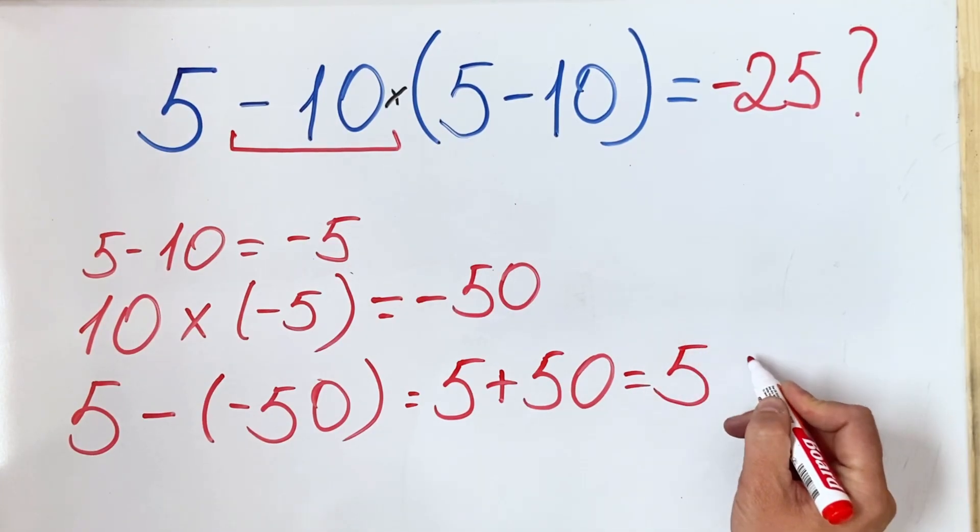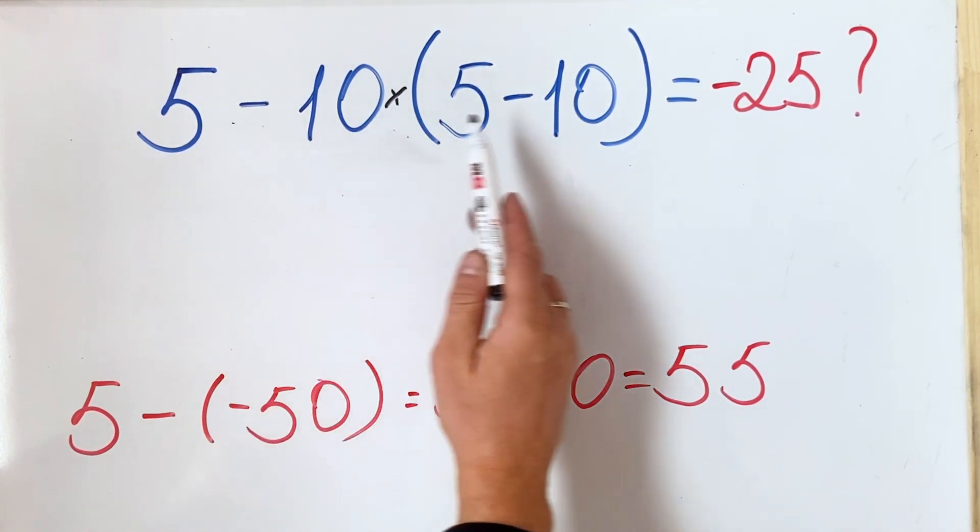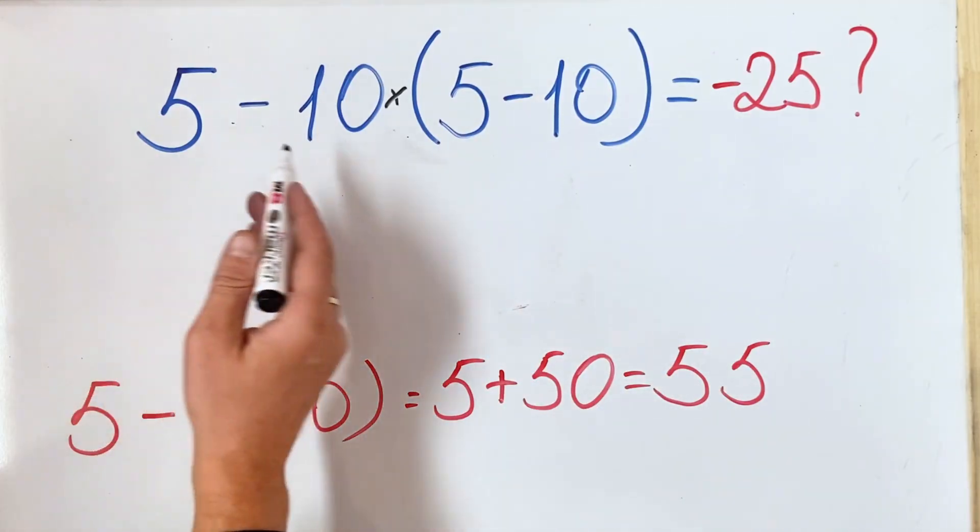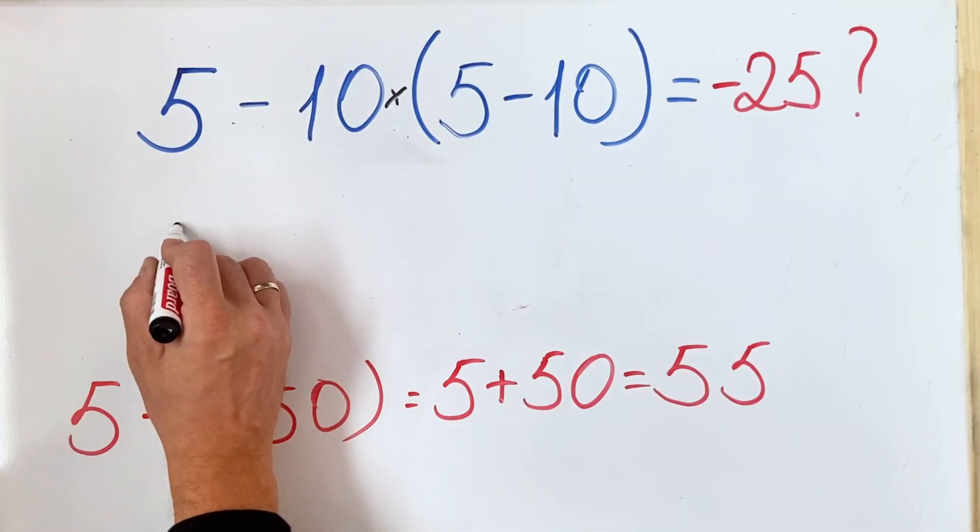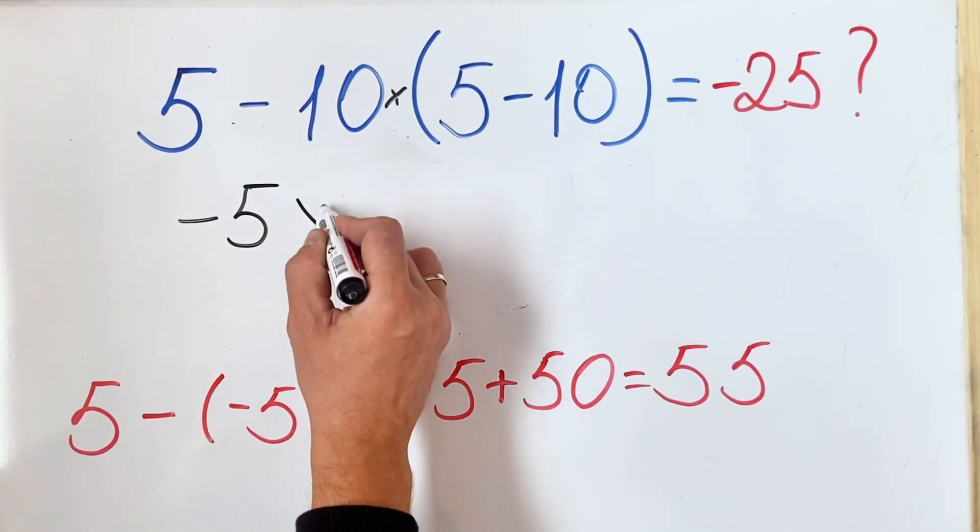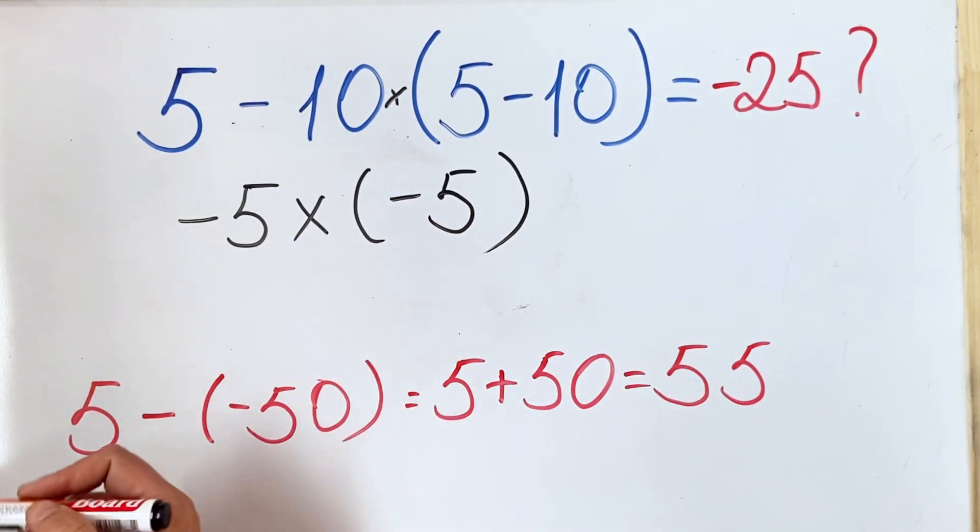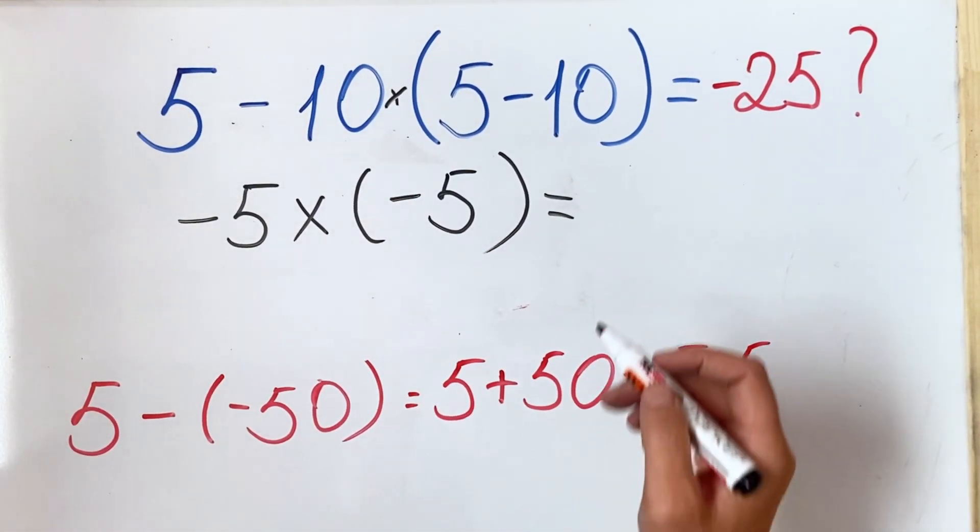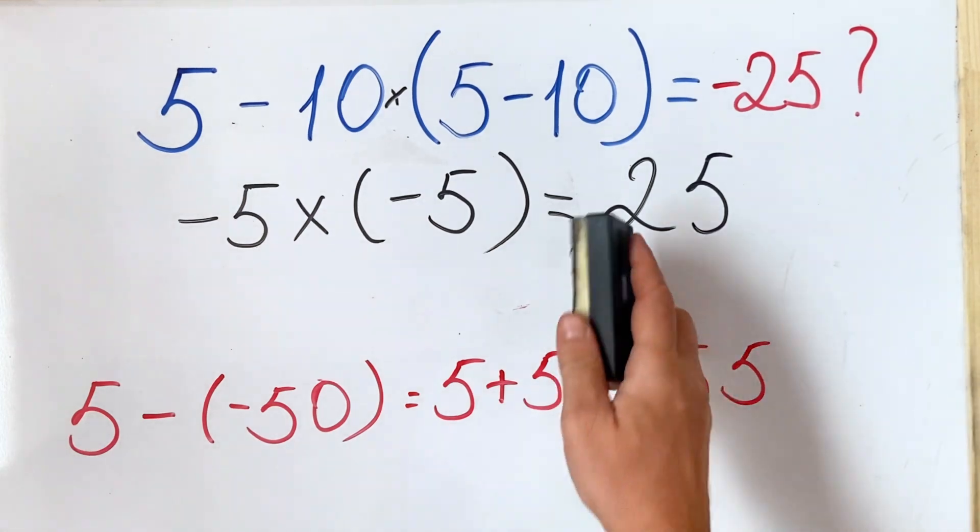This would be the correct answer, but where most people get it wrong is when they don't follow the order of operations. They do everything from left to right. So what they do, they first do the subtraction, which is 5 minus 10, they get minus 5, and they multiply to whatever is in parentheses, so minus 5 times minus 5, and the final result is 25. But of course, this is not the correct result.